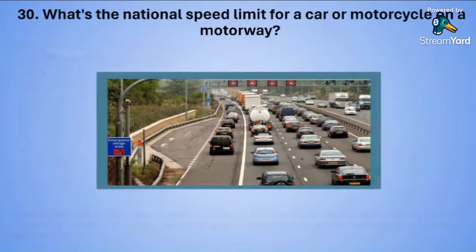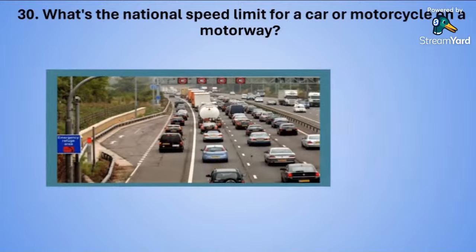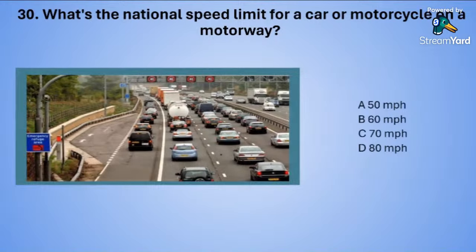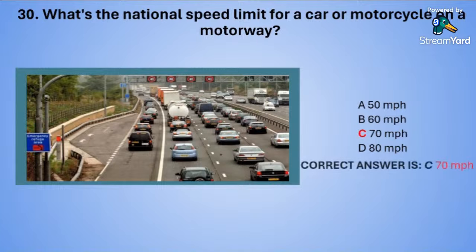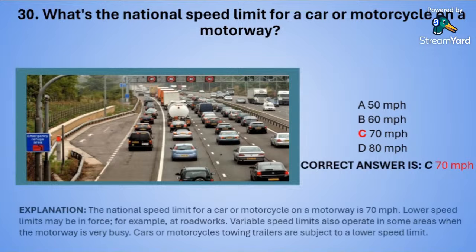Question thirty: What's the national speed limit for a car or motorcycle on a motorway? A: 50 miles per hour. B: 60 miles per hour. C: 70 miles per hour. Or D: 80 miles per hour. The correct answer is C — 70 miles per hour.